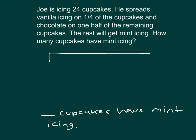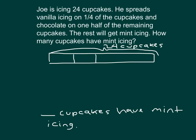Let's start with a bar model, sometimes called a tape diagram, and let's look at that first sentence. Joe is icing 24 cupcakes. We know the total amount of cupcakes that he is icing, so there's 24 cupcakes, and we'll label that portion of our tape diagram. He spreads vanilla icing on one-fourth of the cupcakes. We can divide our tape diagram into four parts, and we can label this first part V for vanilla. That's one-fourth of 24. One-fourth of 24 is 24 divided by 4, which is 6. So there are 6 vanilla cupcakes.